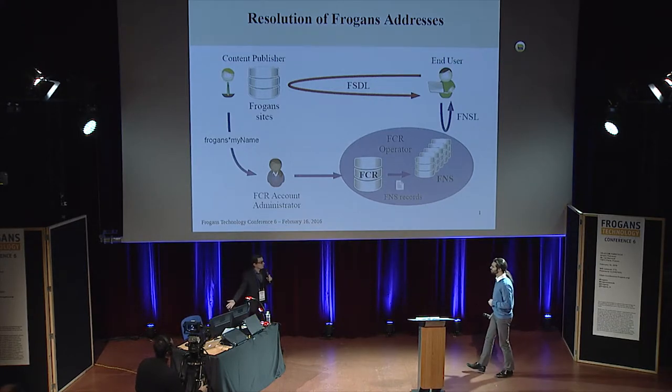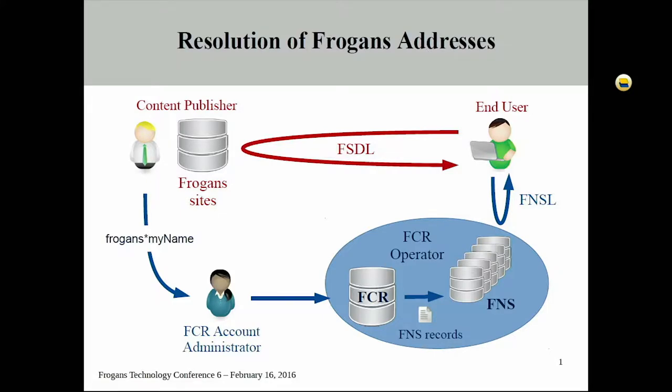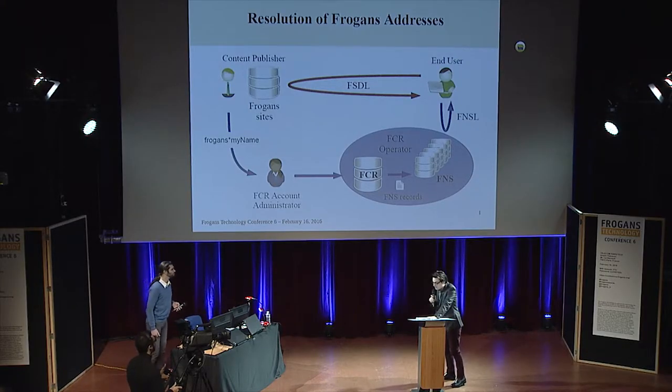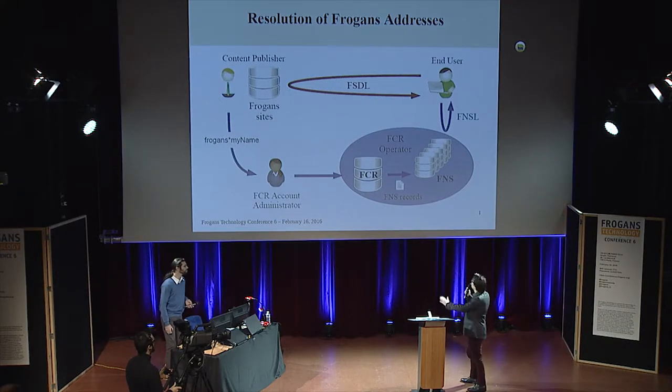Thank you very much, Stephan. Matthew, do you want to come here so that you can manage your presentation? The problem we have today is to try and understand what happens when an end user has Frogan's player on their smartphone, their watch, or whatever connected object they have, and they've keyed in 'Frogan star parasol' and they access the content — i.e., Thomas's content. What took place behind this apparently very simple action from the user?